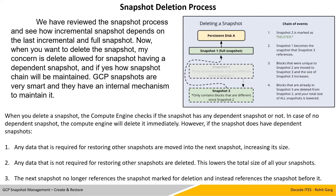However, if a snapshot does have dependent snapshots, then any data required for restoring other snapshots is moved into the next snapshot, increasing the size of that particular snapshot. For example, where we have taken snapshots 1, 2, and 3, and snapshot 3 has reference pointers to snapshots 1 and 2 along with changes made after snapshot 2 — if we delete snapshot 2, then snapshot 3 needs to relink all data from snapshot 1 and copy all changes that were previously part of snapshot 2, resulting in an increased size for snapshot 3. Any data not required for restoring other snapshots is deleted.